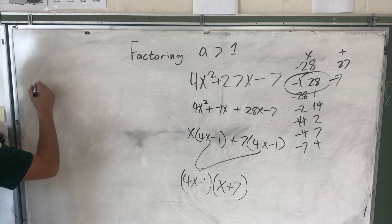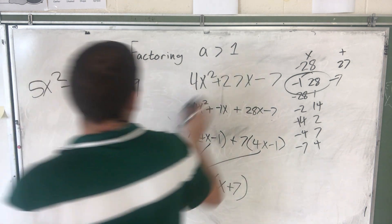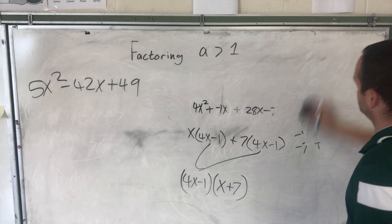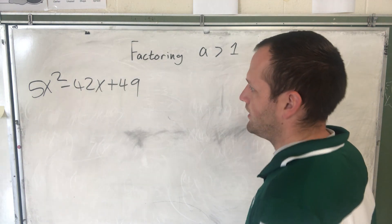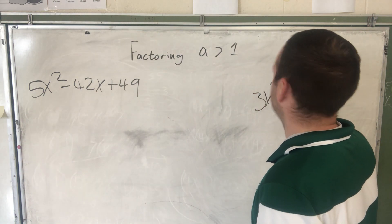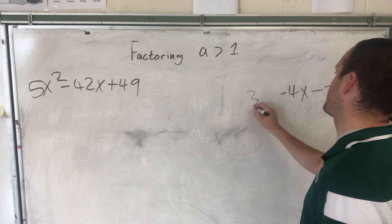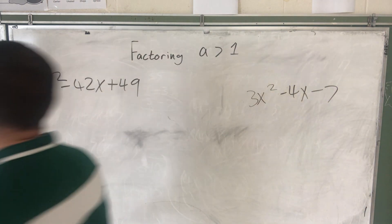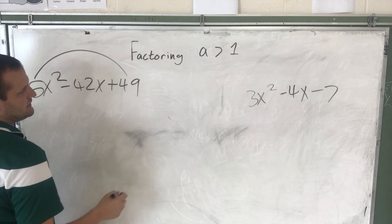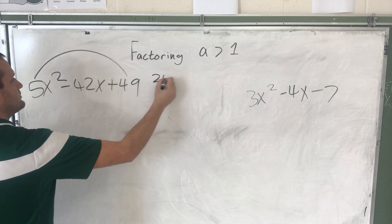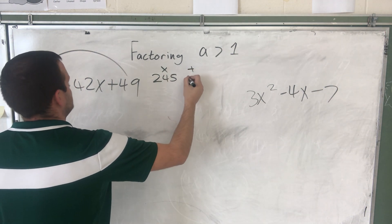Let's try another problem: 5x² minus 42x plus 49. Write that on your paper. Step 1: multiply 5 and 49, which gives 245. Now I need two numbers that multiply to 245 but add to negative 42.